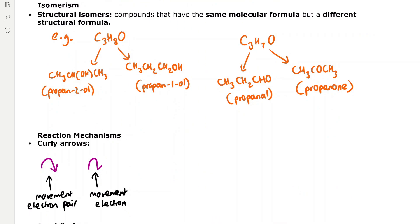Structural isomers are compounds that have the same molecular formula but different structural formulae. For example, two isomers of C₃H₈O are propan-2-ol and propan-1-ol — the alcohol groups are at different positions. Also, for C₃H₇O, two isomers are propanal and propanone — same molecular formula but different functional groups. These are the two main types of structural isomerism: different positioning of functional groups, and different functional groups present.